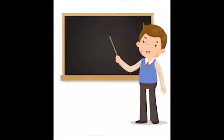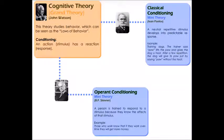A variant of cognitive theory was proposed by Watson. This theory studies human behavior, which can be seen as the law of behavior, and introduced the conditioning aspect. Conditioning is an action or stimulus that produces a reaction or response. This theory proposed by Watson introduced the concept of stimulus and response — if there is an action, there is a reaction. This is also a broader theory in scope.